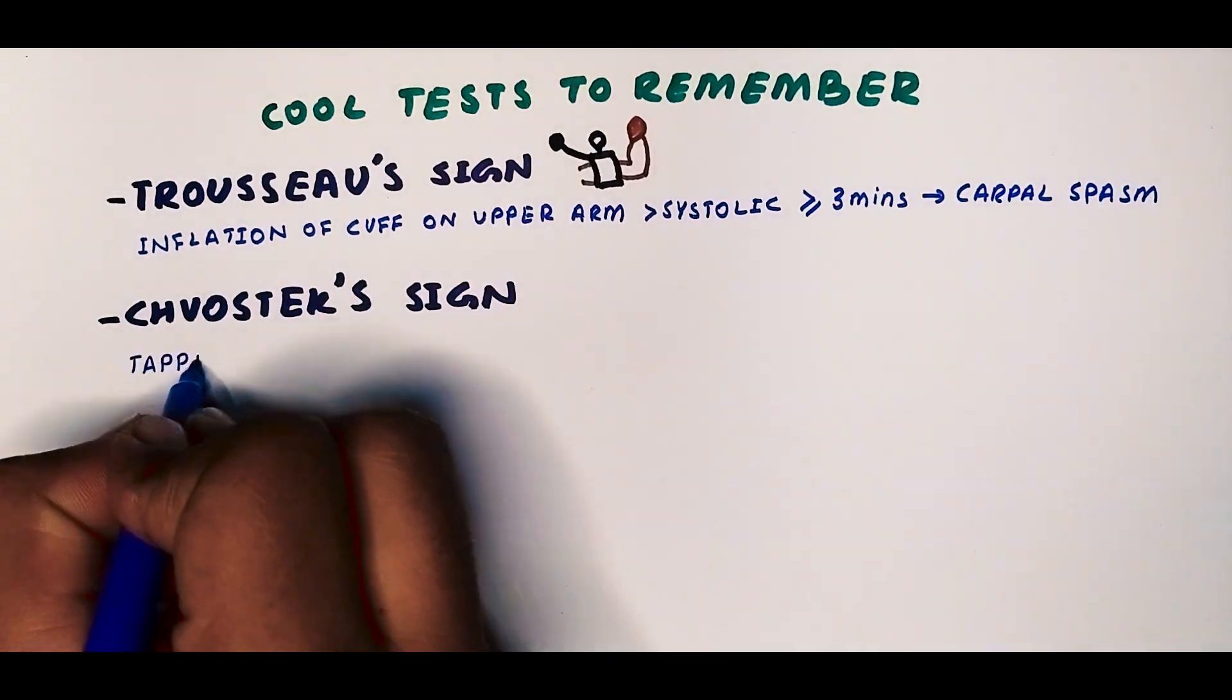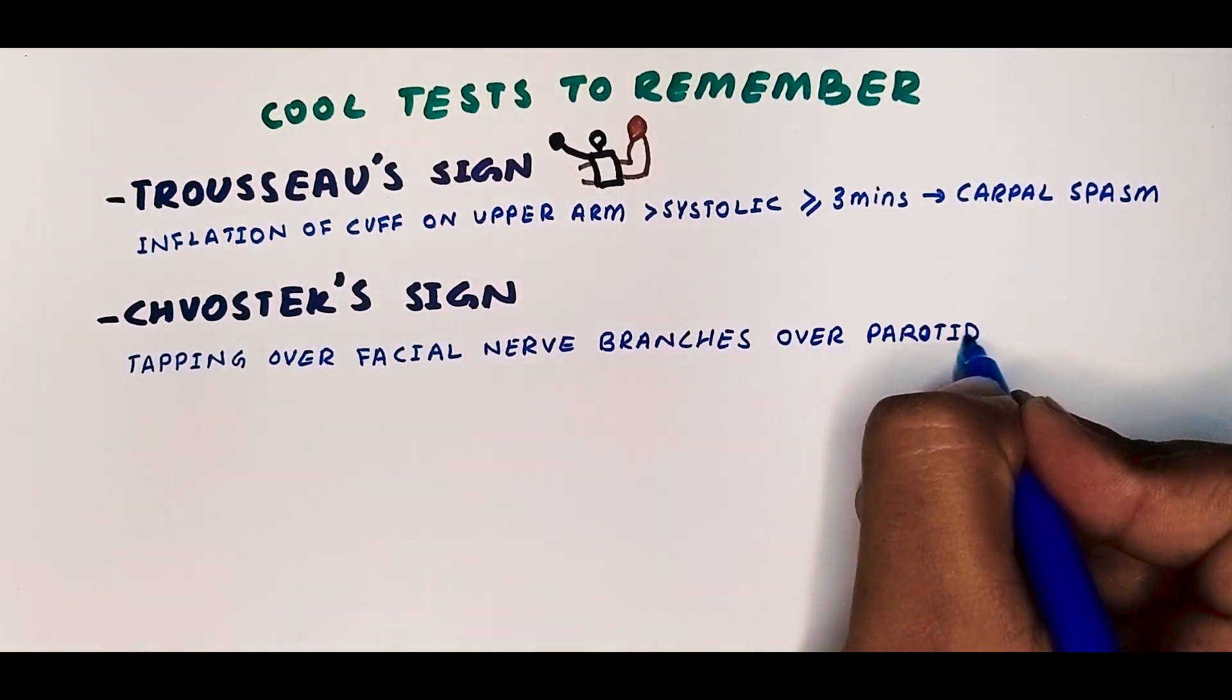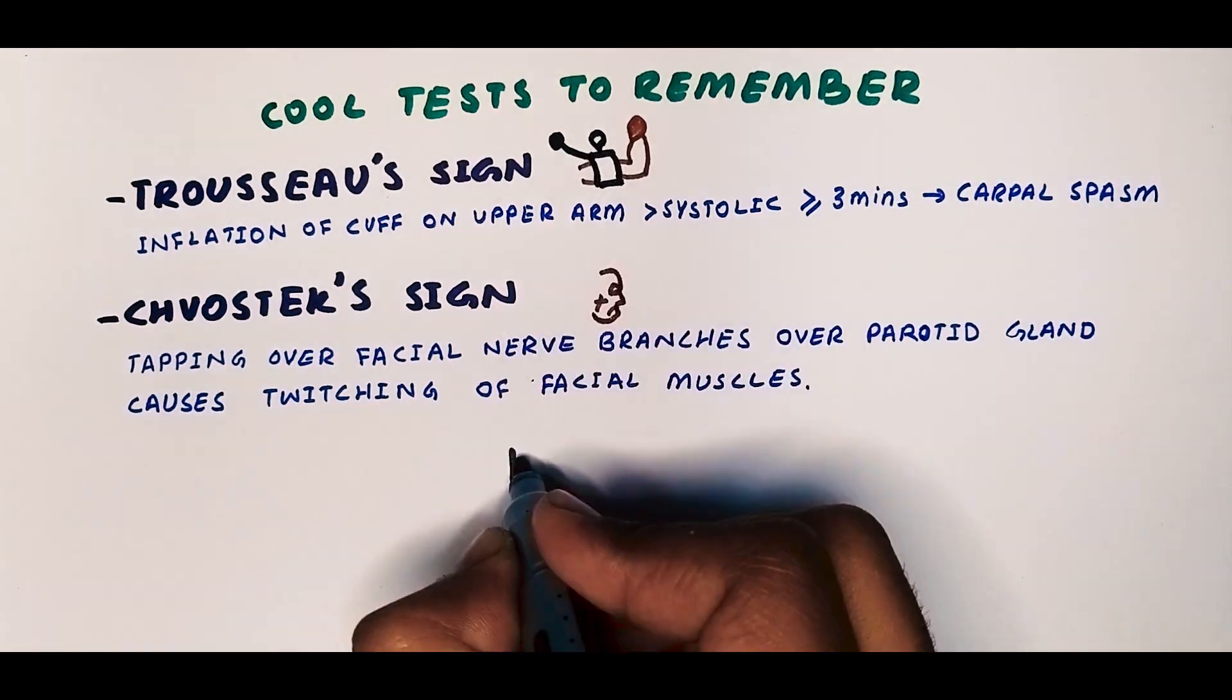And Chvostek's sign, where tapping over the facial nerve branches, over the parotid gland area, causes twitching of the facial muscles.